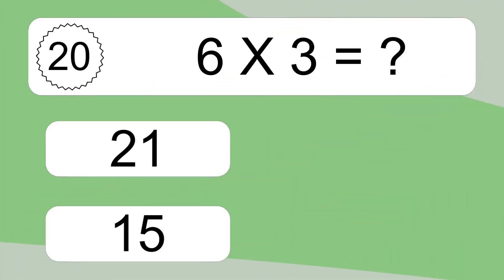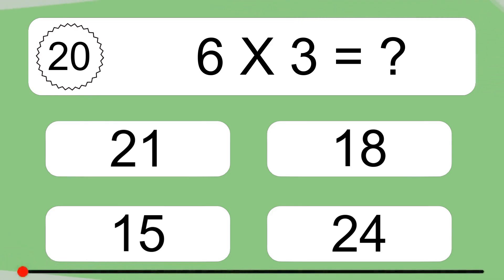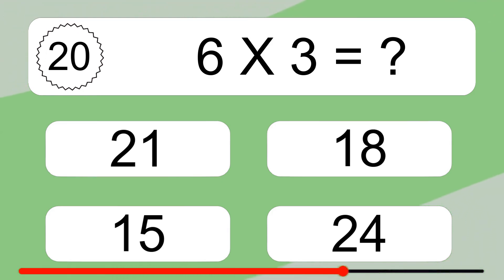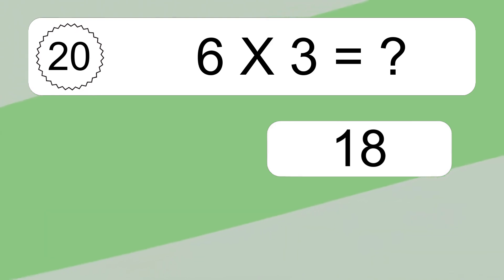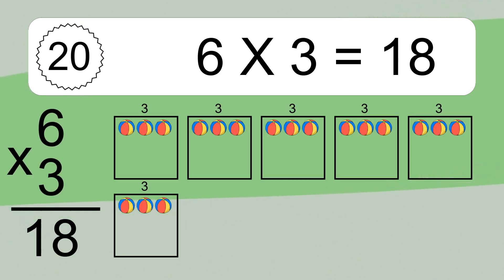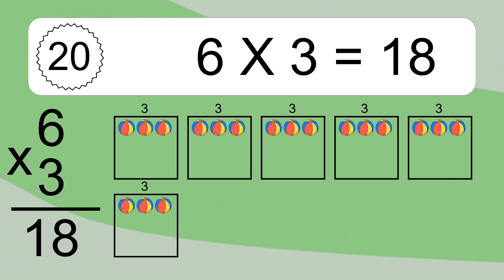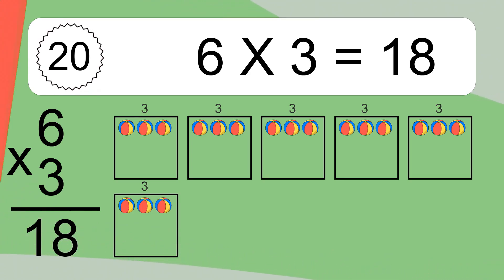6 times 3 equals what? 6 times 3 equals 18. We have 6 boxes and each box has 3 colorful balls inside. If you count all the balls in all the boxes together, you will have 6 times 3 balls. This equals 18 balls.